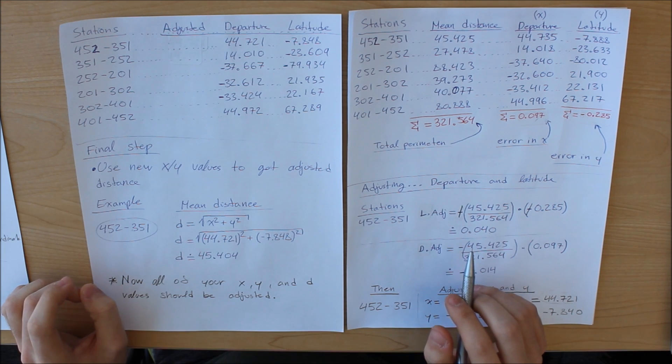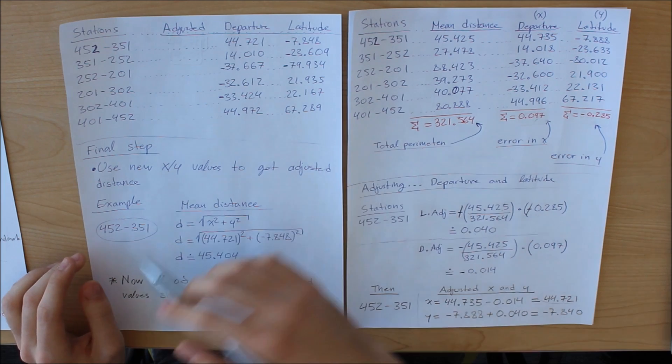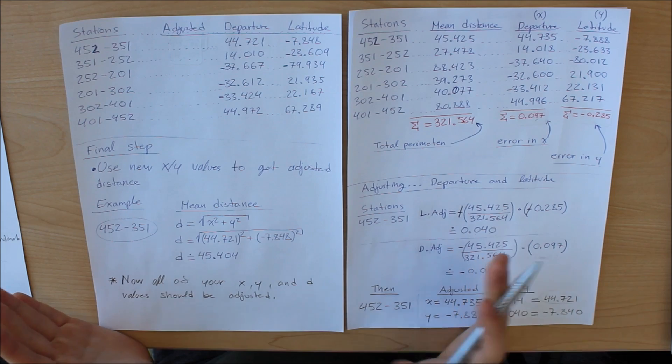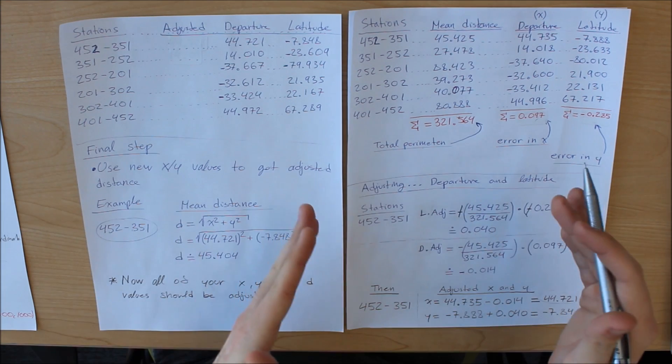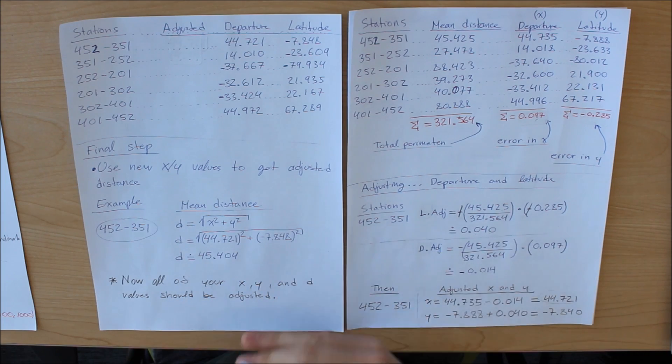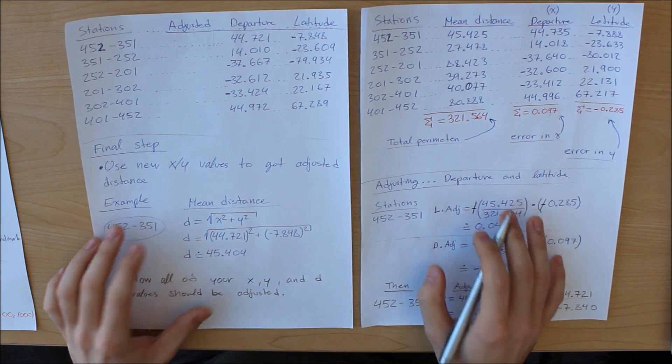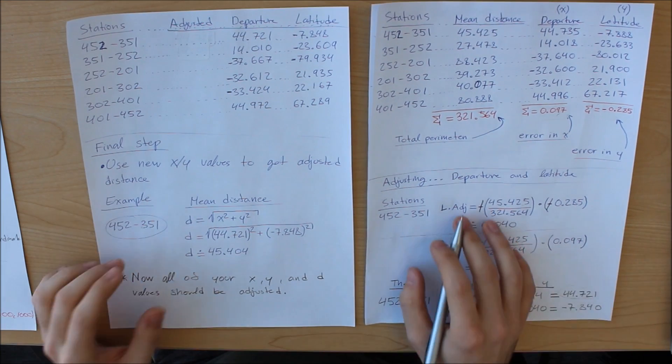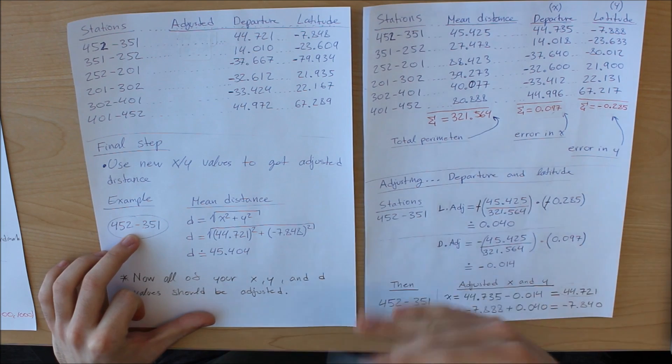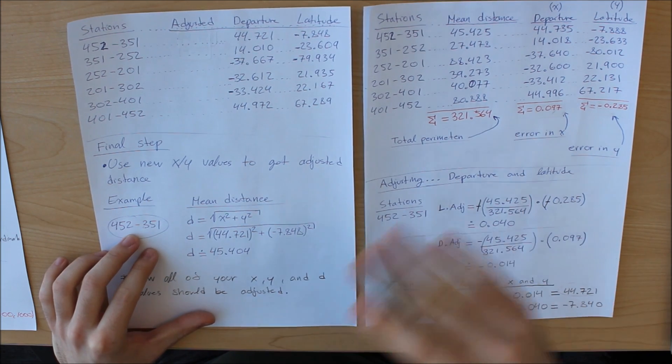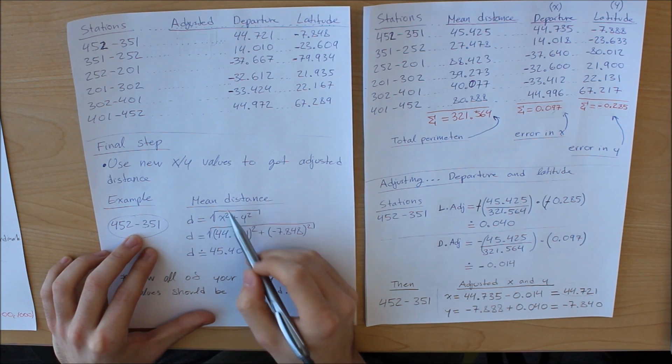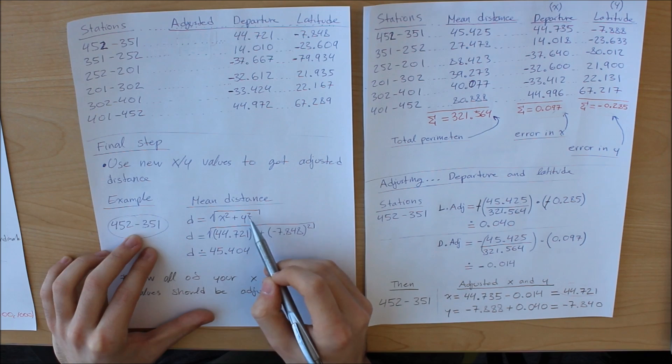Now the final step is to get our distance, our adjusted distance. And that only makes sense, of course, because we have our adjusted x. We have our adjusted y. Therefore, our mean distance will also be slightly different. And how we do that is very simple. We just use the Pythagorean theorem. And once again, I'm only using one example. But again, you must repeat for each one. So you're going to have six sets for each value. So our distance is equivalent to the root of x squared plus y squared.